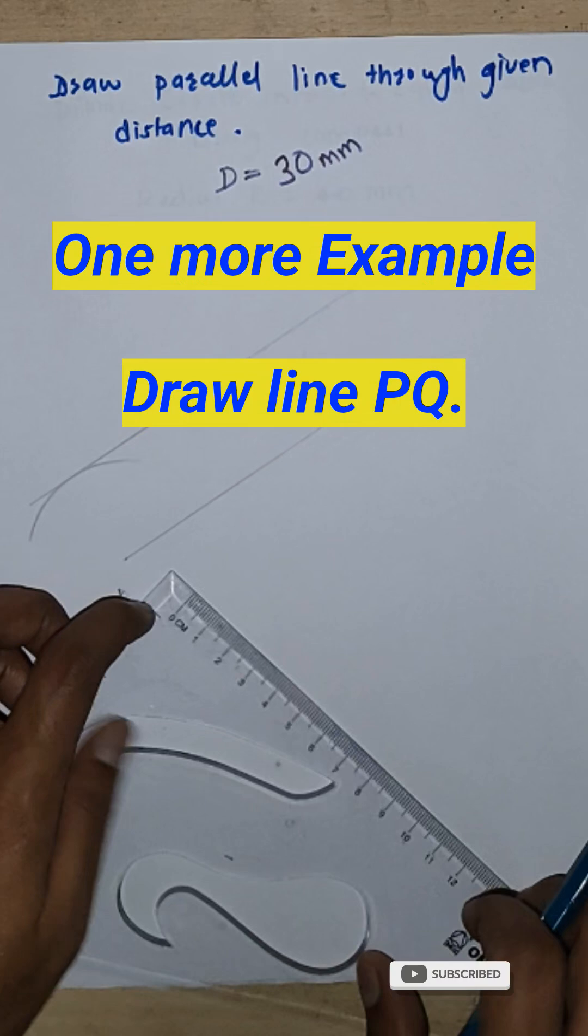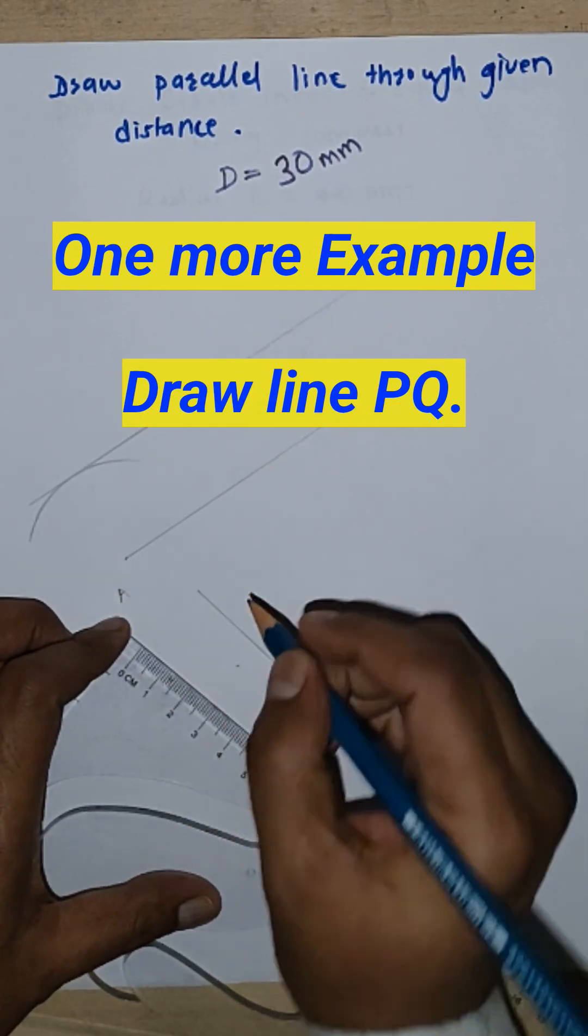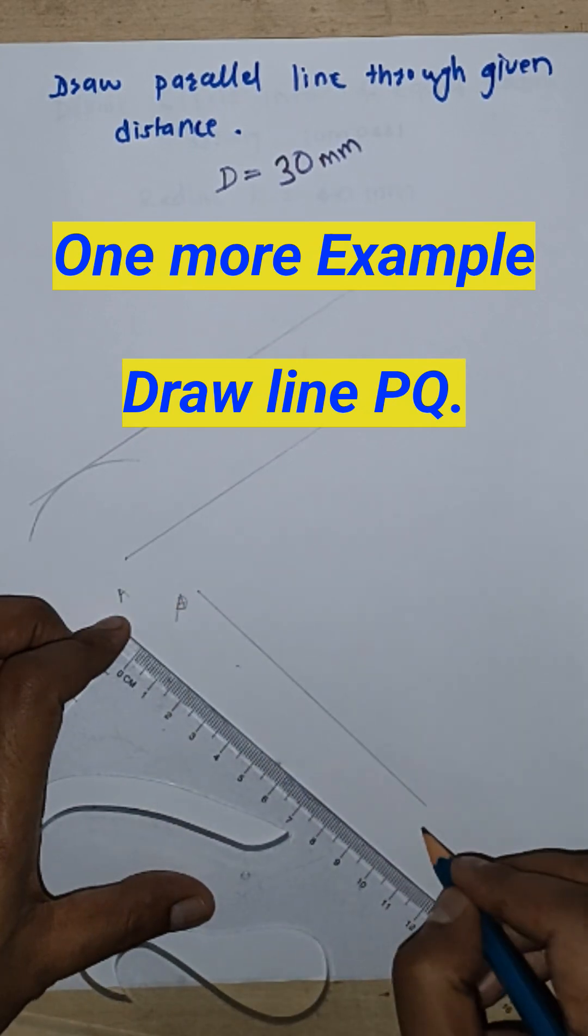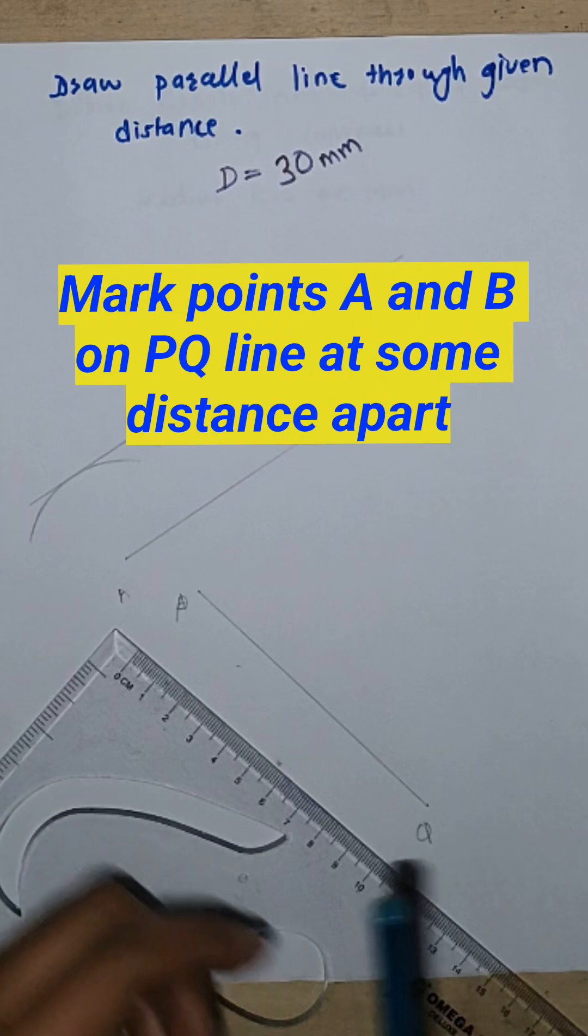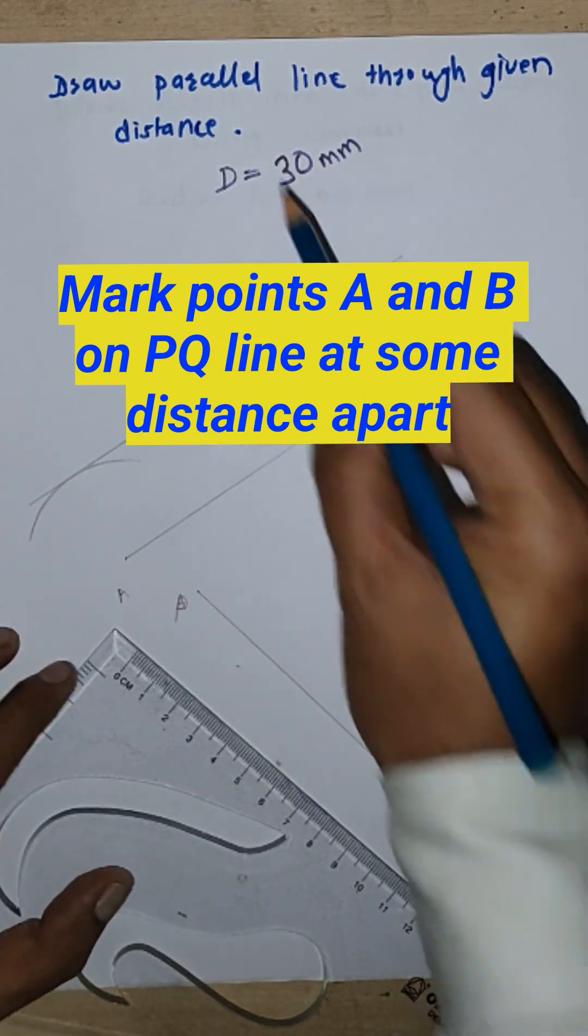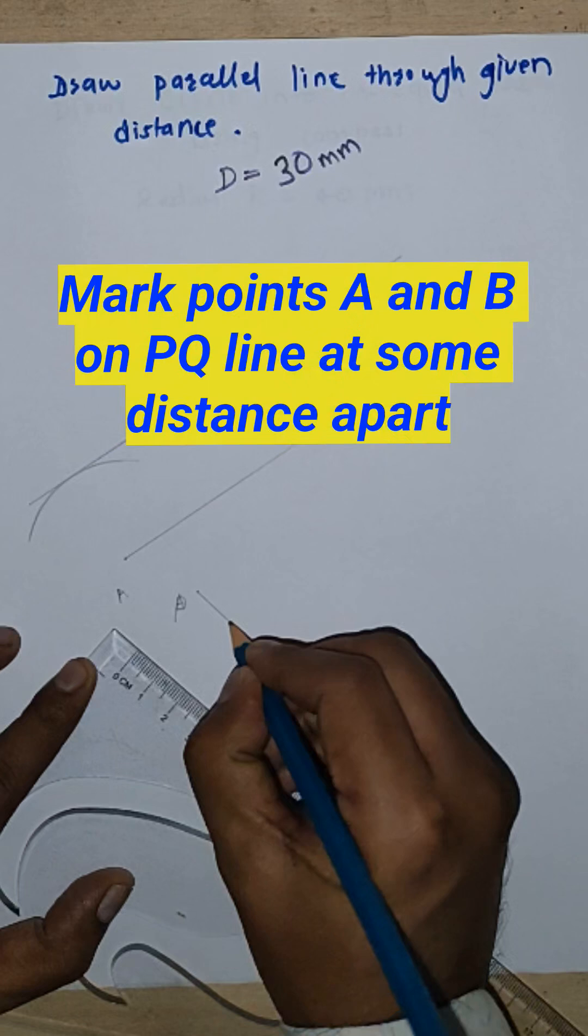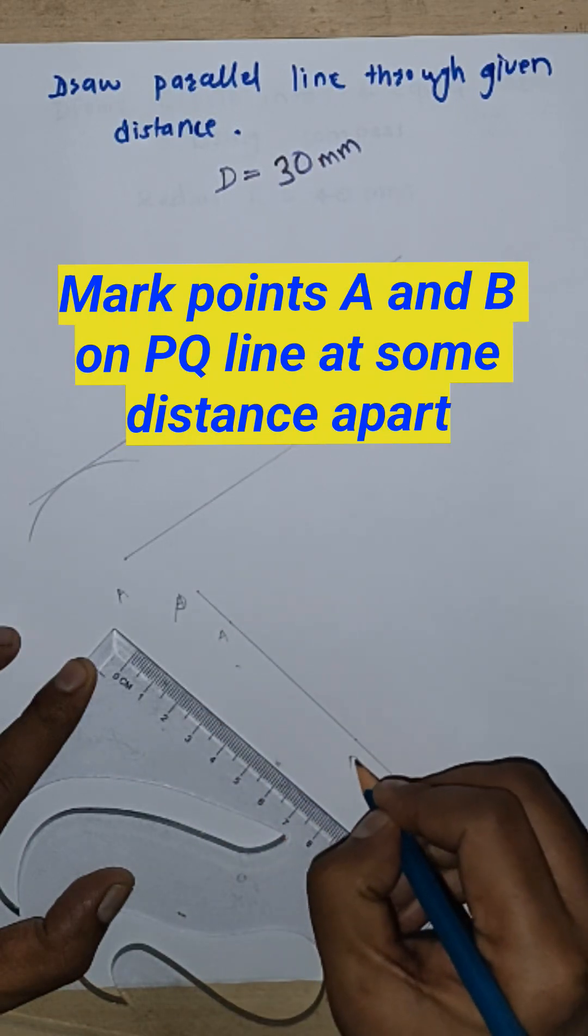Now this is another line, the PQ line. Again we have to draw a parallel line through 30 mm. We are taking these two points, A and B.